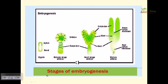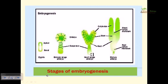In zygotic embryogenesis, the zygote has 2n chromosomes with an apical and basal polar region. It first forms a globular structure, then a heart-shaped embryo where root and stem regions form, then a torpedo-shaped embryo, and finally the mature embryo with an apical meristematic region that will divide to produce a shoot, and a root apical meristem from which the root is generated.